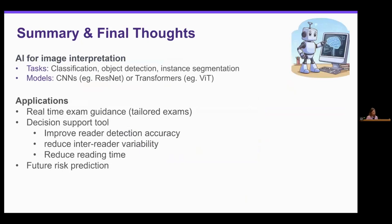To wrap up: we talked about AI for image interpretation and the three tasks — classification, object detection, and instance segmentation. Convolutional neural networks have been used for about a decade for these tasks, and transformers are starting to become popular as well. We talked about using classifiers for real-time exam guidance and as a decision support tool, where it can improve reader detection accuracy, reduce inter-reader variability, and reduce read time. And we talked about the ability to potentially use these tools for future risk prediction.